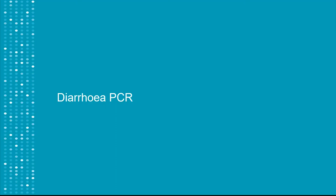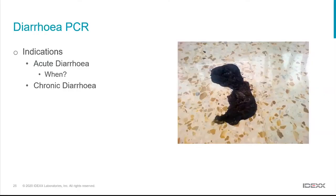Turning to diarrhoea PCR panels — this is not suggesting a PCR for every patient with diarrhoea. If a patient has acute diarrhoea but is clinically well, they probably ate something silly and symptomatic therapy will suffice — parasitology is always good but PCR may not be necessary. However, with severe acute diarrhoea, a whole litter of unwell puppies, or significantly haemorrhagic diarrhoea, adding a diarrhoea PCR is very useful.